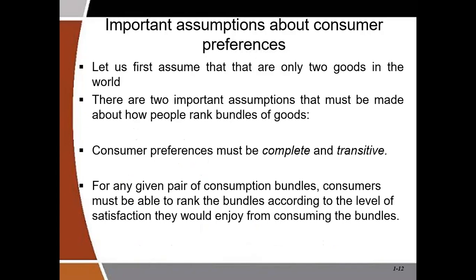The important properties of consumer preference are: number one, consumer preference must be complete; and number two, consumer preference must be transitive. These are assumptions we make about how people rank their goods based on their preferences.